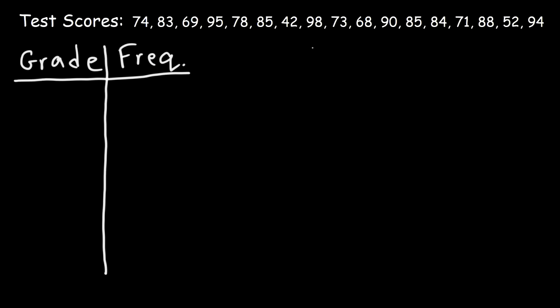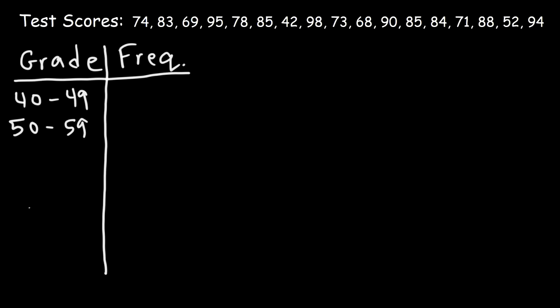The lowest test score I see is in the 40s — the lowest is 42. So my lowest range is going to be 40 to 49, and then the next range will be 50 to 59. You can calculate the class width, which in this case is about 10, but for grades it's just easy to do it this way.